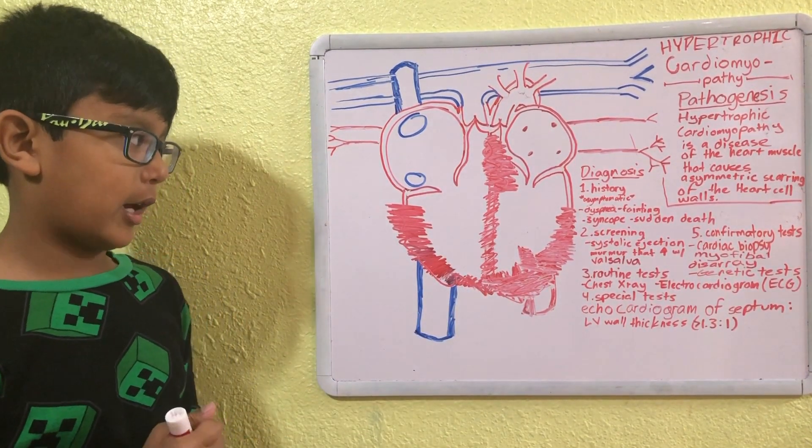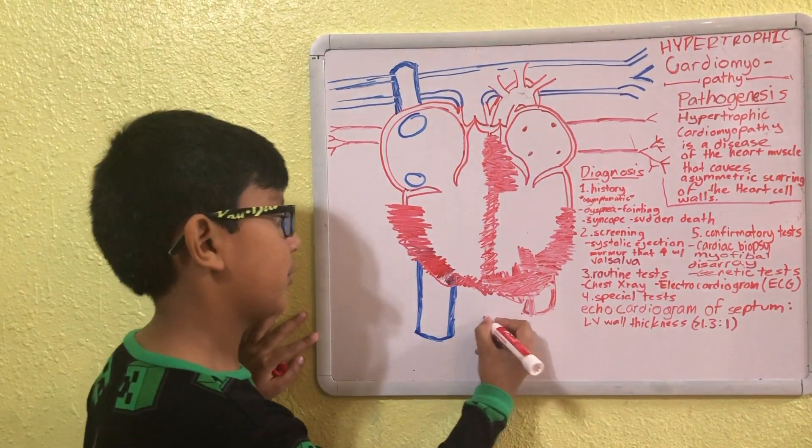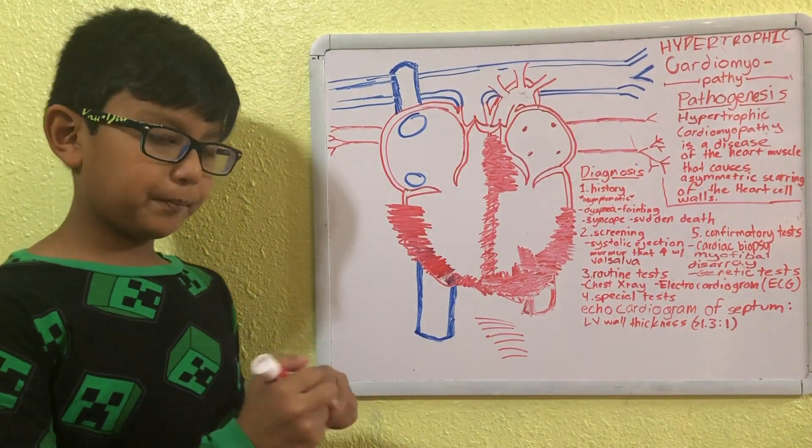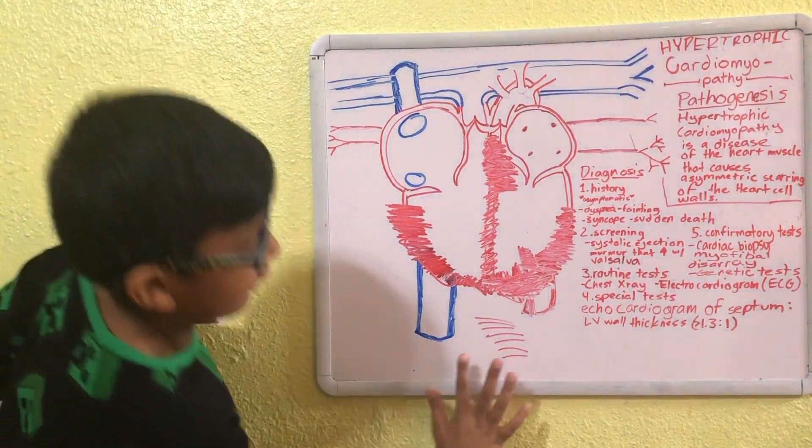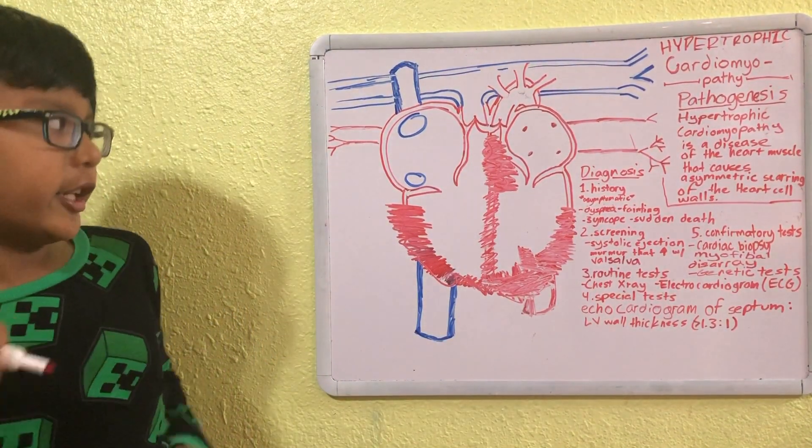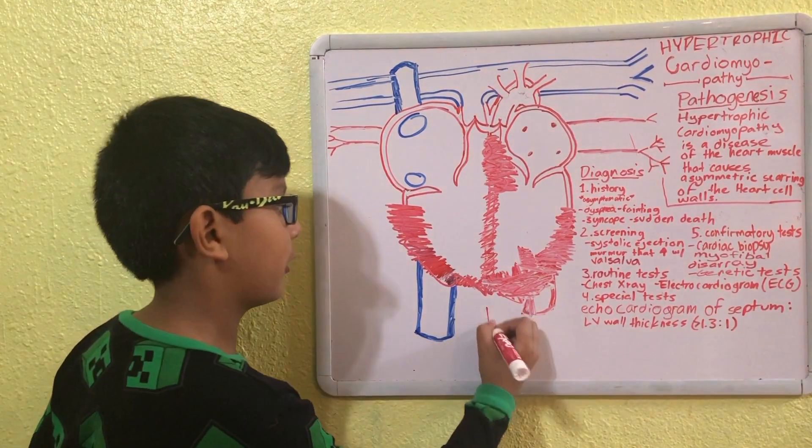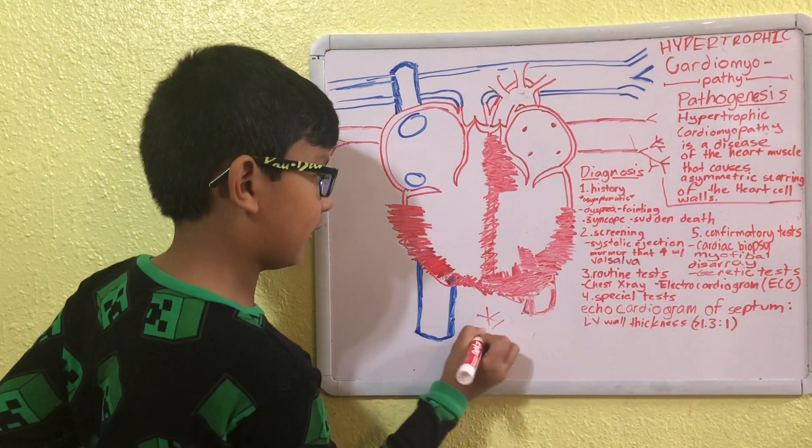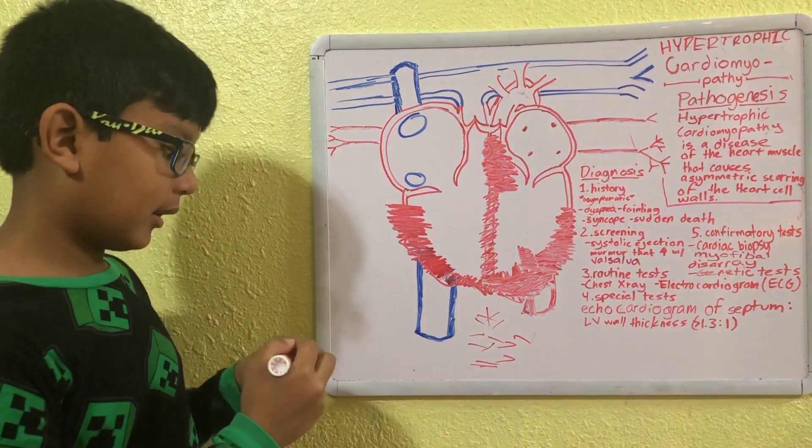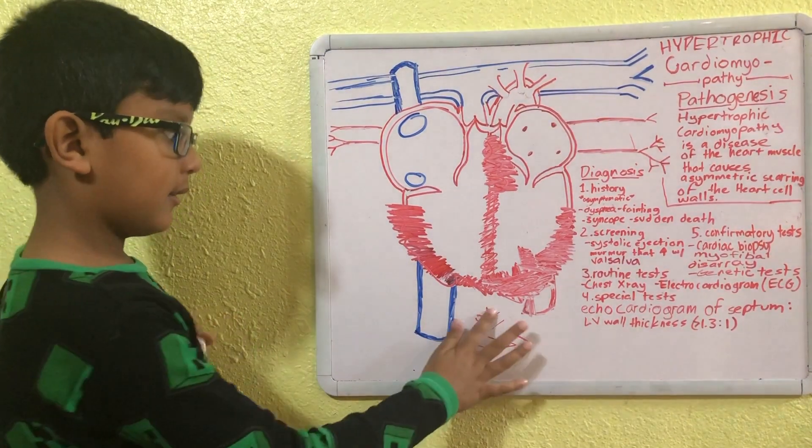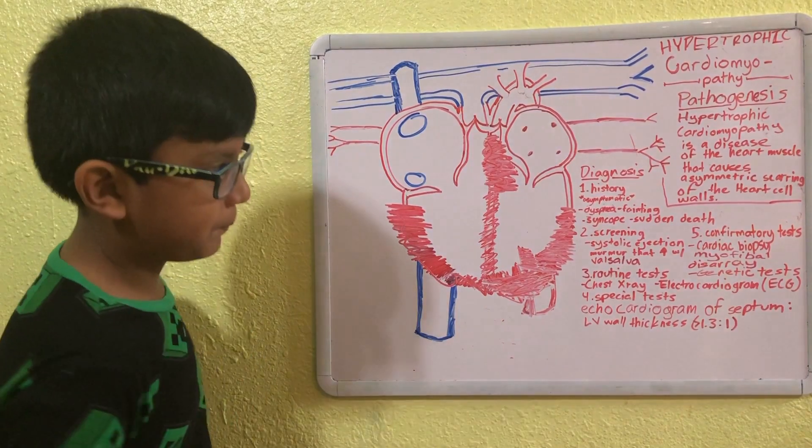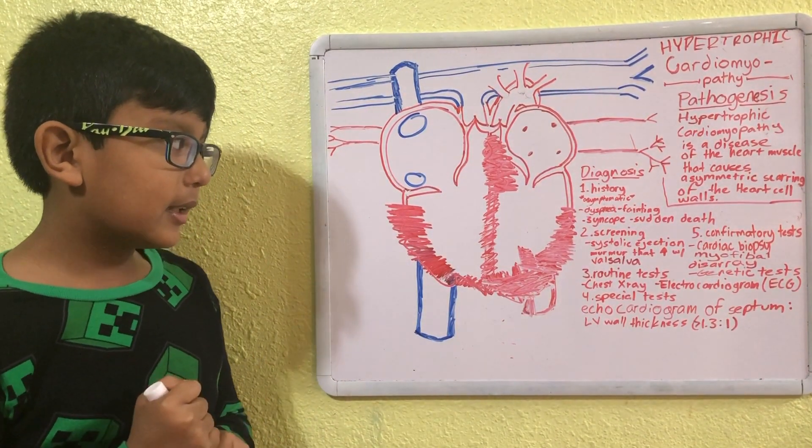what is a myofibrillar disarray? Well, usually the fibers of the heart muscle are nice and organized—they're in what we call an array. But in someone with hypertrophic cardiomyopathy, it could be something like this, it could be something like that. So that's what we mean when we see a myofibrillar disarray. And the last one: